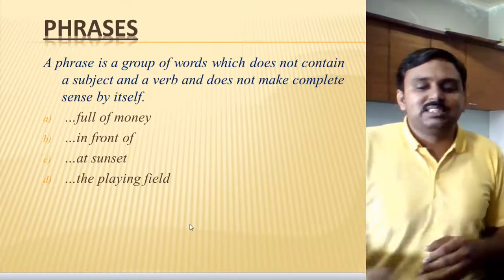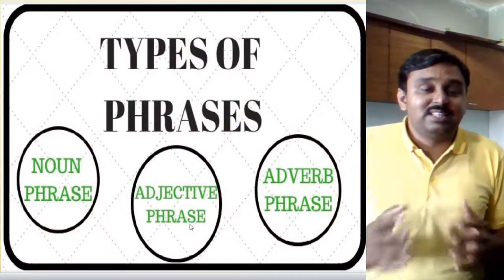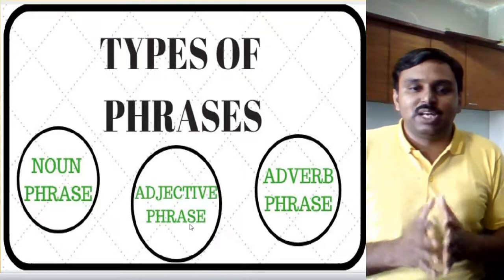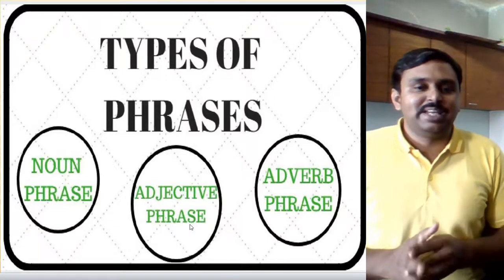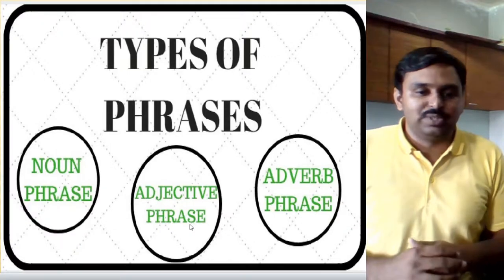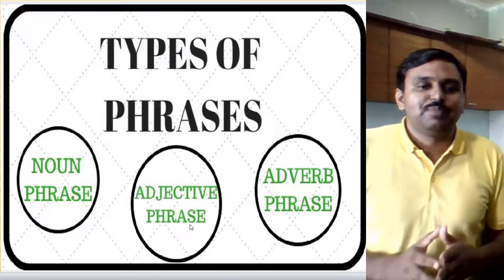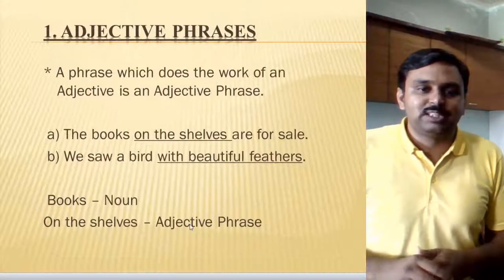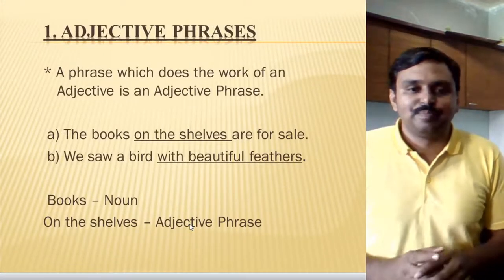I hope the phrase meaning and the identification of it is clear to you all. Now let's discuss about the kinds of phrases. There are three kinds of phrases. The very first is the adjective phrase, then we have adverb phrase, and third we have noun phrase. First of all we will discuss about adjective phrase, and after that we will look at the other two.